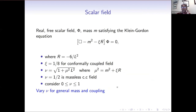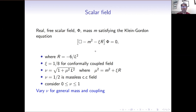We will be studying a free real scalar field phi satisfying the Klein-Gordon equation, whereby the box here is the d'Alembertian operator in curved space, M is the mass of the field, R is the Ricci scalar which is given here, and xi is the coupling constant which couples the field to the Ricci scalar. For a conformally coupled field, xi in three dimensions is 1 over 8.